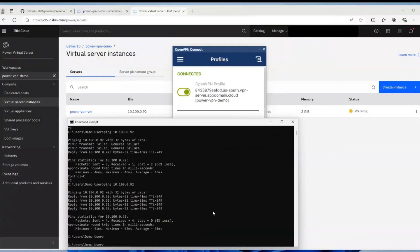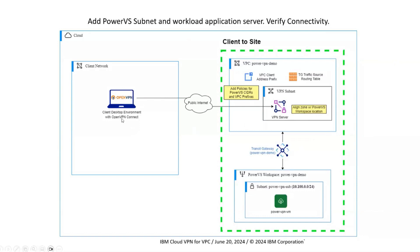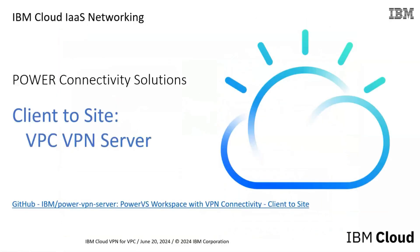We've verified our connection and our VPN is working as expected. Looking back at our diagram: we used our OpenVPN Connect client to connect to our VPN server, which routes traffic over our transit gateway to our Power VS workspace. We're able to talk to that subnet including the VSI or VM inside it, going through all of that networking. Thank you for watching this demo — if you have any questions, feel free to open an issue on the GitHub page at github.com/ibm/power-vpn-server.